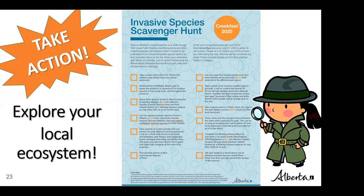We've created a scavenger hunt for you to try out. You can download this page and head out to Fish Creek Park, or if you don't live in Calgary, see how many items you can find in a local park, lake, or river near you. Once you've found everything on the list, email it to Bow Habitat Station and win a prize! The scavenger hunt list will be available to download after this webinar on Bow Habitat Station's Facebook page.